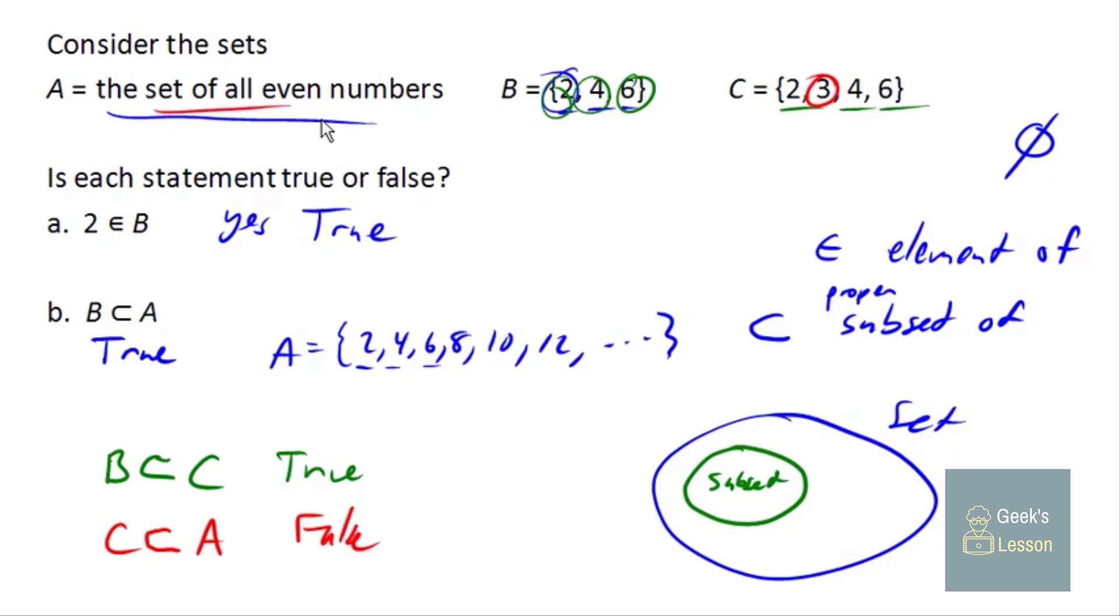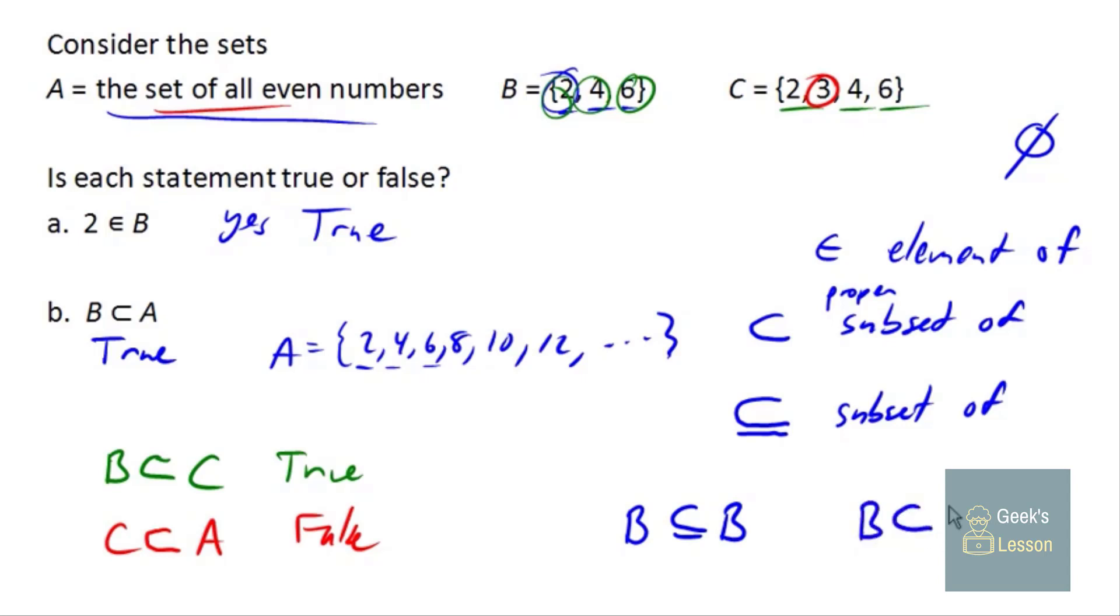Now, I call this a proper subset, because there's a second notation, which looks like this. And this is just the generic subset of. This little line underneath it implies equality, kind of like a less than or equal to sign. So we could say that B is a subset of B, because they're actually equal. It would not be correct to write B is a proper subset of B, because they're actually equal. So that's not true. But this is just fine.